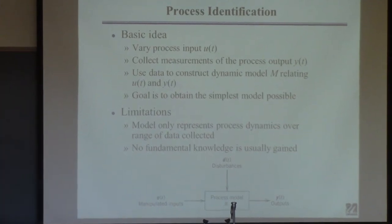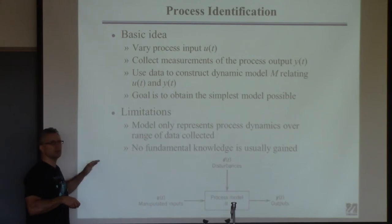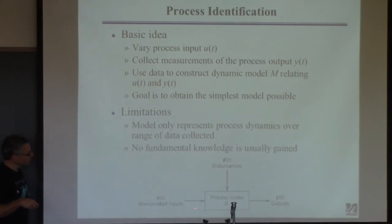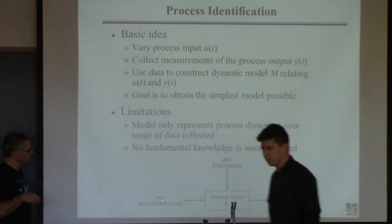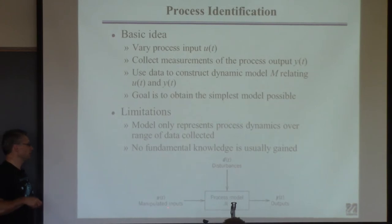Instead of developing models from first principles by conservation of mass, energy, and momentum, we're going to collect data by doing a set of experiments. We'll move an input around—building a simple model between some input, which we call U, and some output, which we call Y. From this input-output information, we're going to build transfer function models directly from the data. This is an alternative for processes that are either complex or just don't justify the effort of detailed modeling.